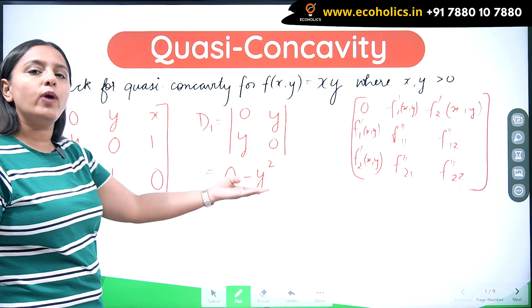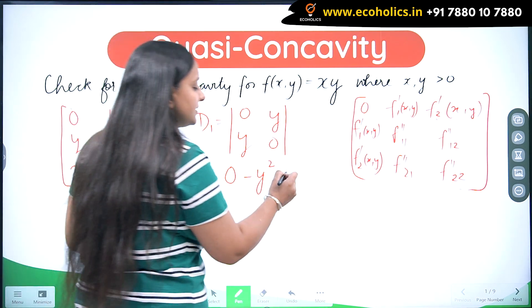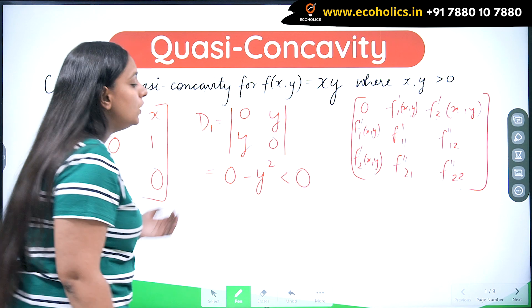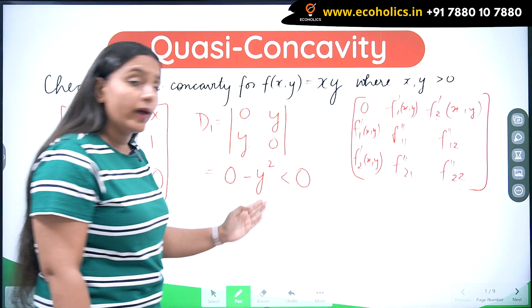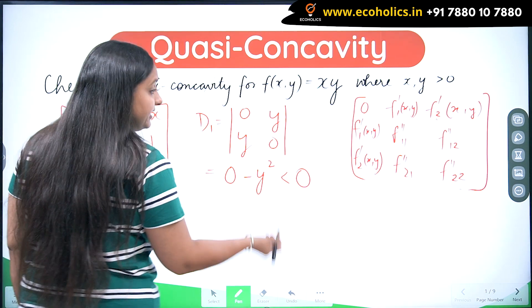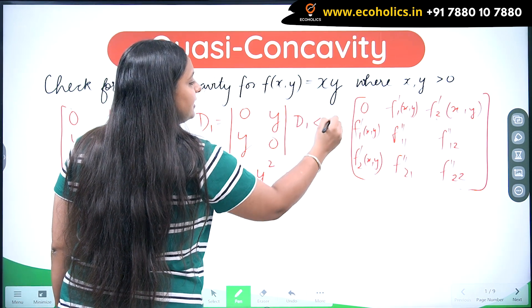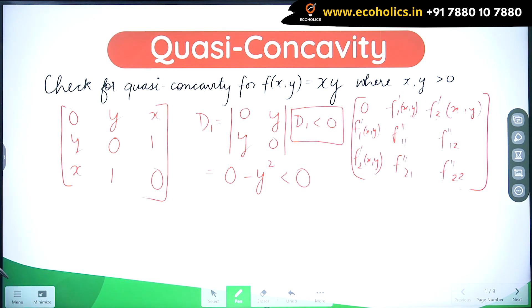I know y is a positive number. Whichever number it is, y squared would always be positive, so the negative sign in front of it makes it strictly less than 0. Since y cannot be equal to 0, so y squared can also not be equal to 0. So I have got my D1 strictly less than 0. The odd determinant has come out to be strictly less than 0.